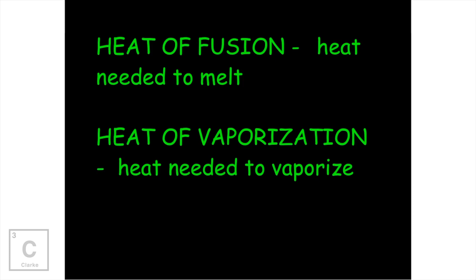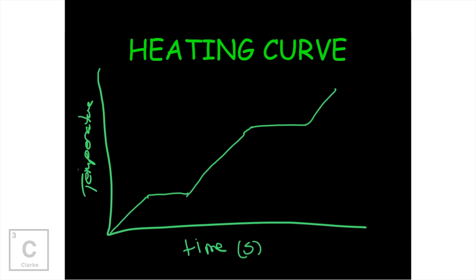A couple of vocab words here because we're going to talk about some curves and graphs. The heat of fusion is the heat needed to melt. The heat of vaporization is the heat energy needed to vaporize. Make sure you write those down. Let's talk about a heating curve. All heating curves are going to have this general shape where we have an increasing slope, a slope of zero, an increasing slope, a slope of zero, and an increasing slope.